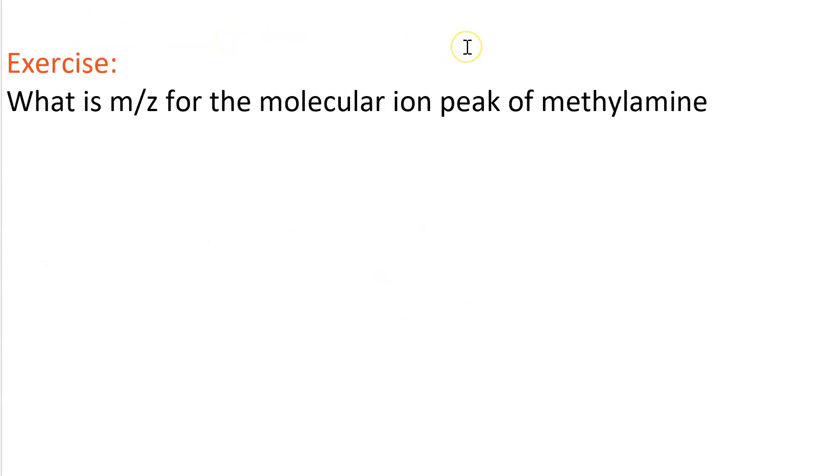Here's an exercise for all you Breaking Bad fans. What is M over Z for the molecular ion peak of methylamine? Here's a Lewis structure for methylamine. It's a methyl group attached to an amino group, has a chemical formula CH3 and NH2, or CH5N.